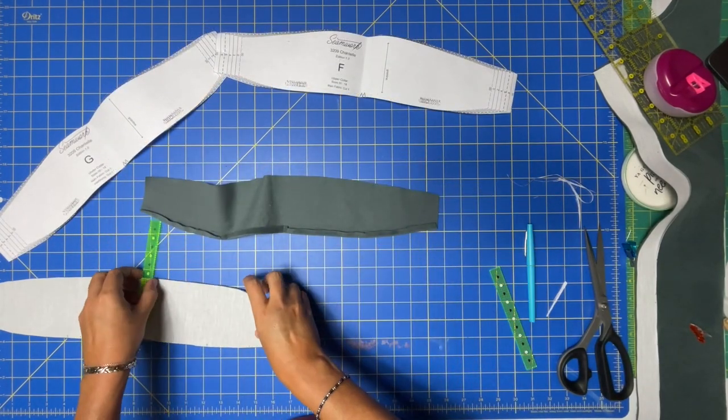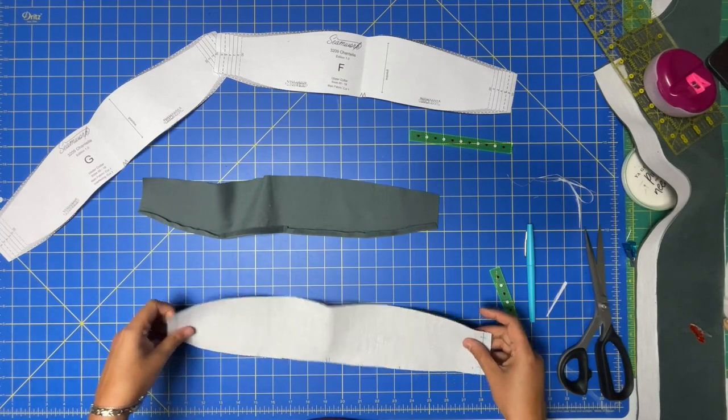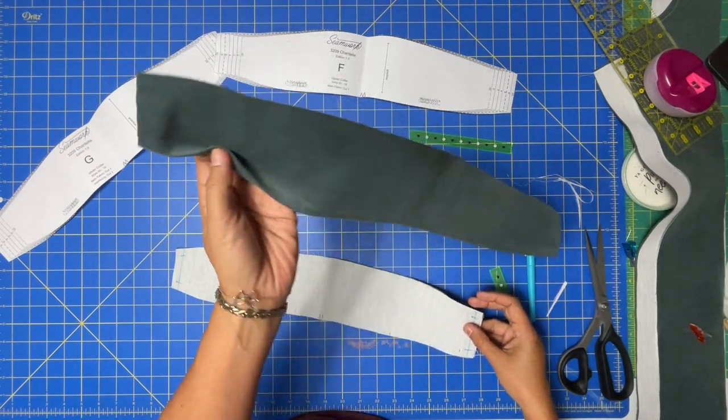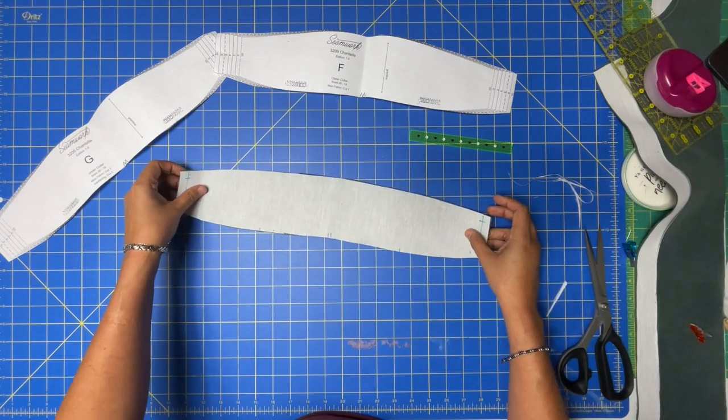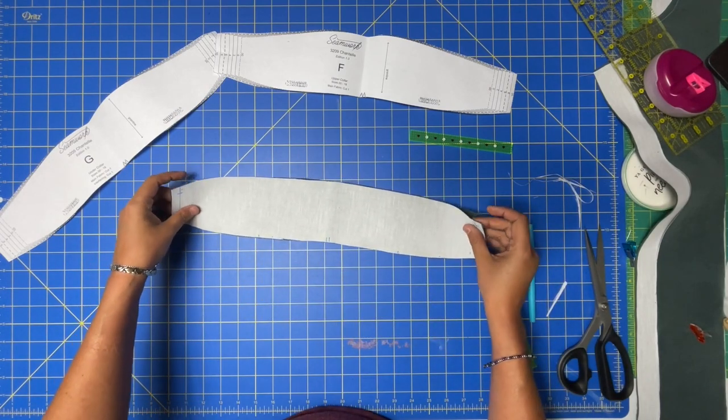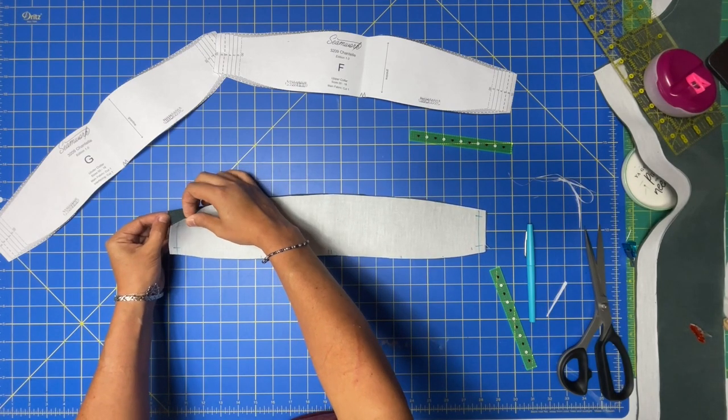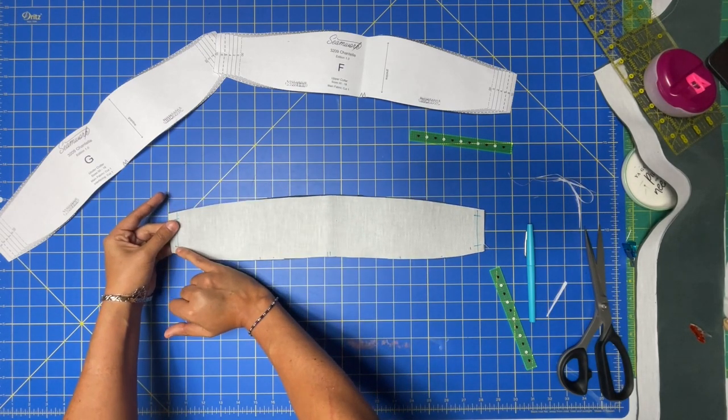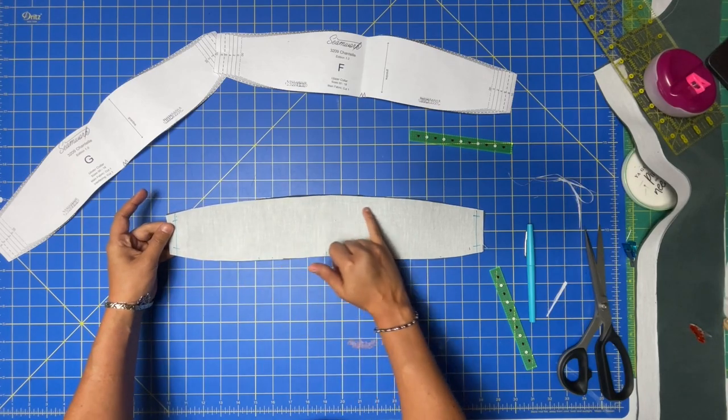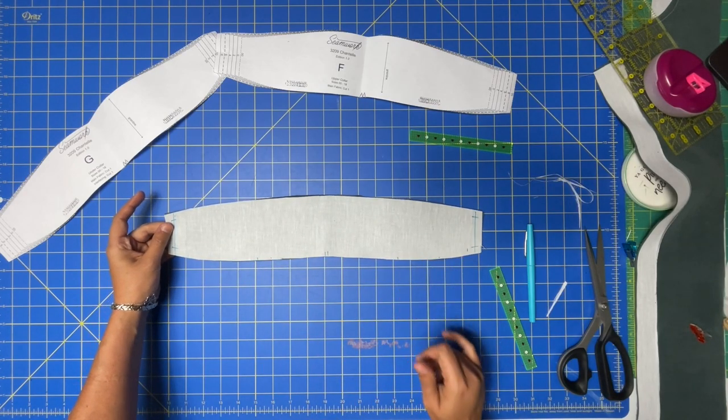Now that I have both of those prepped, they go right sides together. This one gets turned this way, this one goes on top like this, and then we're just going to sew around these raw edges—starting at the three-eighths point here, pivoting here, coming all the way around, pivoting here, and then back down again.